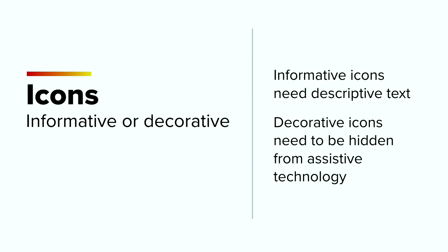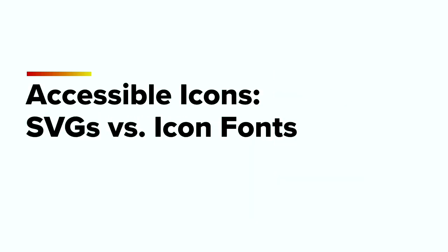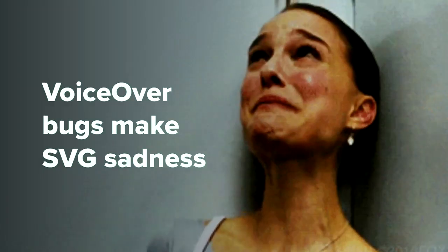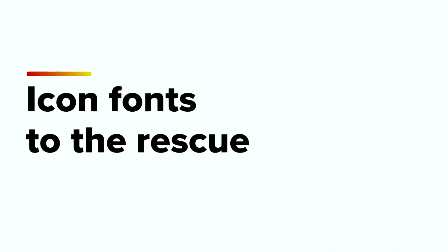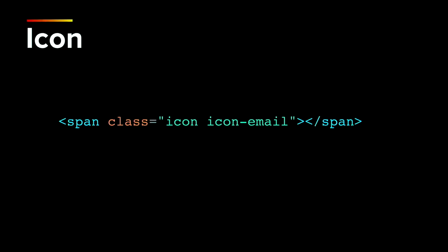Icons are a great way to add flourish to your product. They're used to supplement key messaging and call attention to areas of importance. Icons can be either informative or decorative. If the icon is informative, it needs to be paired with descriptive text. If the icon is decorative, it needs to be hidden from assistive technology because it doesn't have any significant value. There are many ways to create accessible icons — the two latest versions of hotness are SVGs versus icon fonts. SVGs is the hottest technique, and it's true. We had all our icons converted to SVGs into an SVG sprite sheet, and it was glorious.